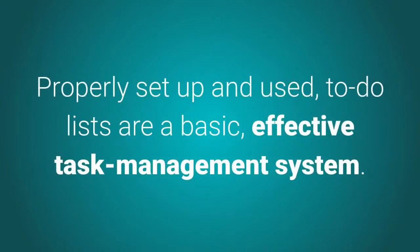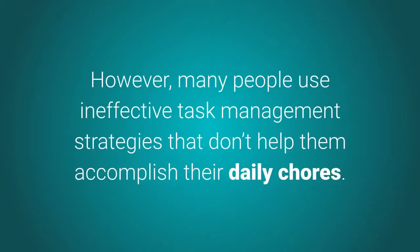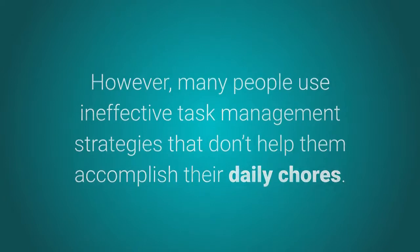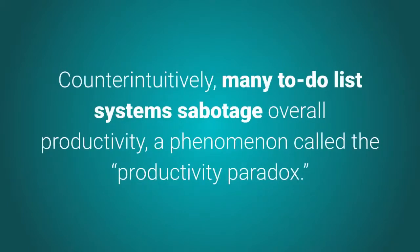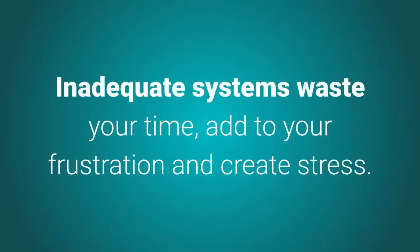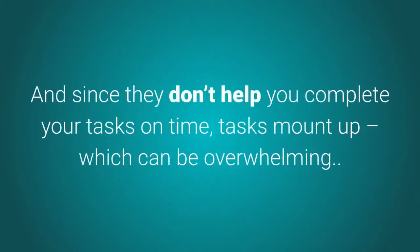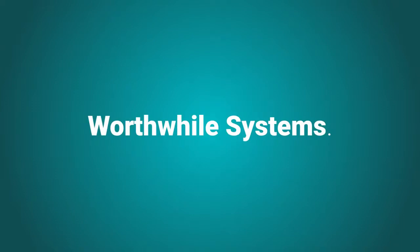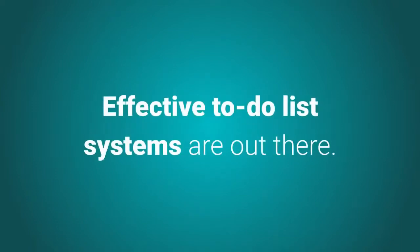The need to track tasks: Properly set up and used, to-do lists are a basic, effective task management system. However, many people use ineffective strategies that don't help them accomplish their daily chores. Counterintuitively, many to-do list systems sabotage overall productivity — a phenomenon called the productivity paradox. Inadequate systems waste your time, add to your frustration, and create stress. Since they don't help you complete your tasks on time, tasks mount up, which can be overwhelming.